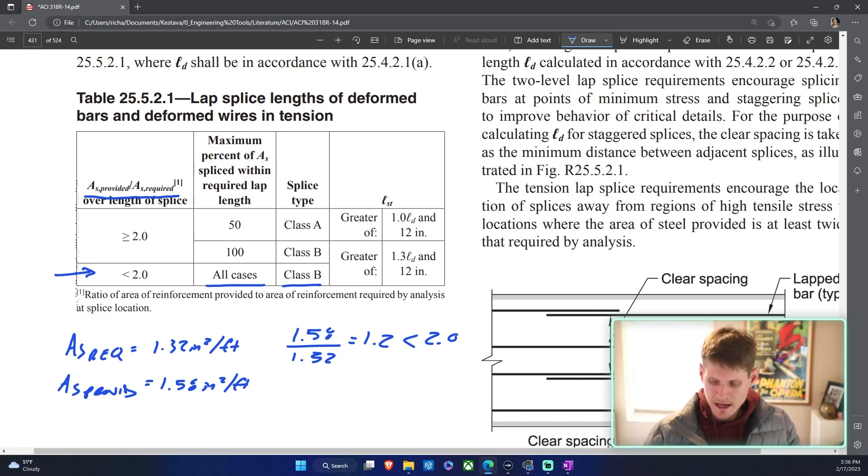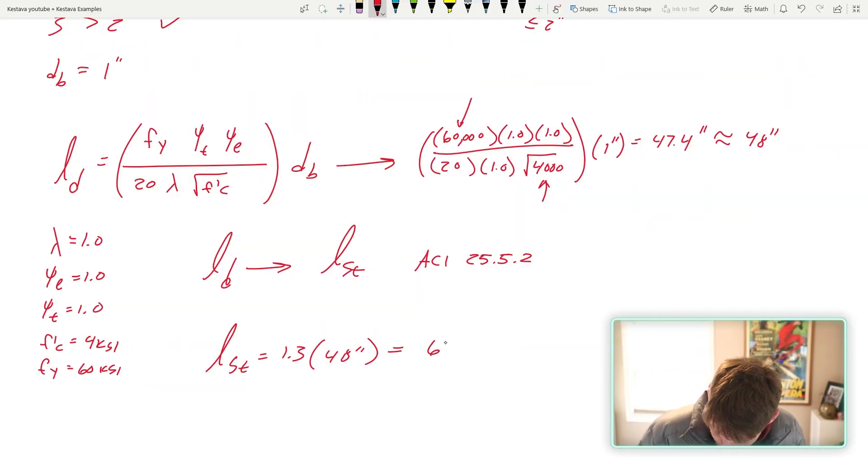That's the only one we can have. If you're curious about class A and class B, check out the commentary over here. Read through that, it gives you additional criteria. And that leads us to the two parameters for l sub st. You need to do the greater of 1.3 times l sub d, which we solved for, and 12 inches. That gets us 63 inches, which is clearly greater than 12 inches, so 63 inches controls. And that is going to be what we need to fully develop and lap our rebar.